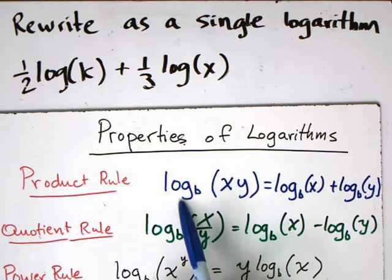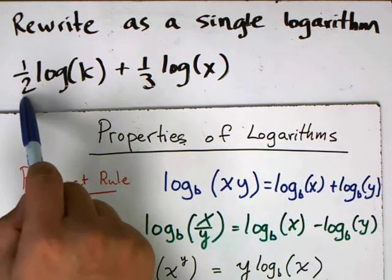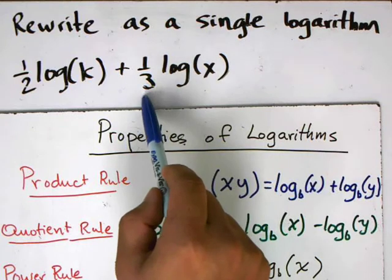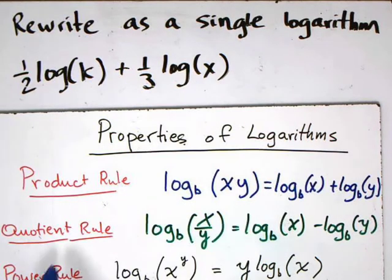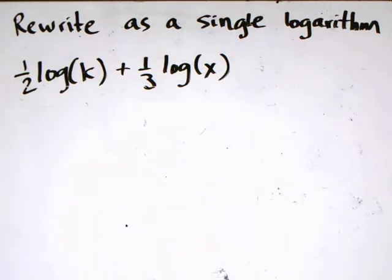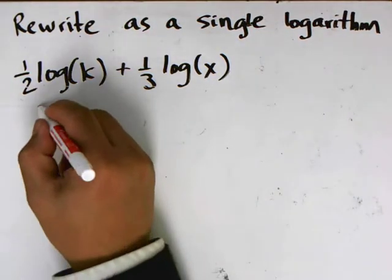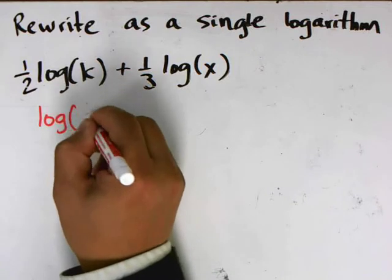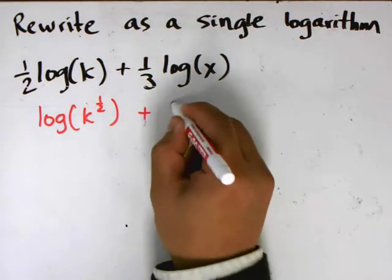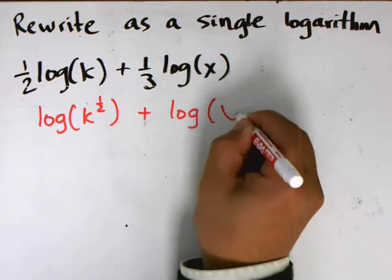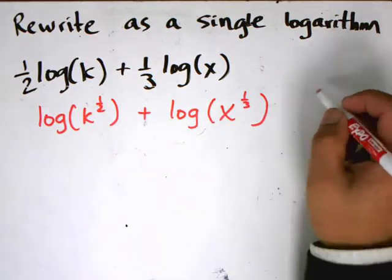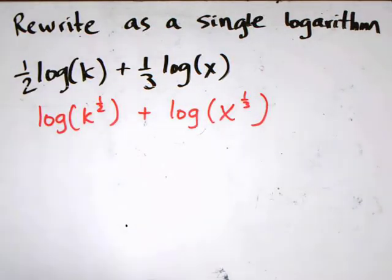The first thing I'm going to do — notice there are constants in front of the logs: one half times log of k, and one third times log of x. So I'm going to apply the power rule. This will become log of k to the one half, plus log of x to the one third. That is applying the power rule.